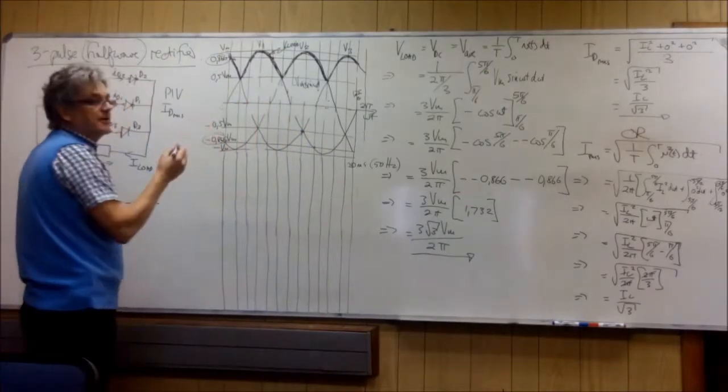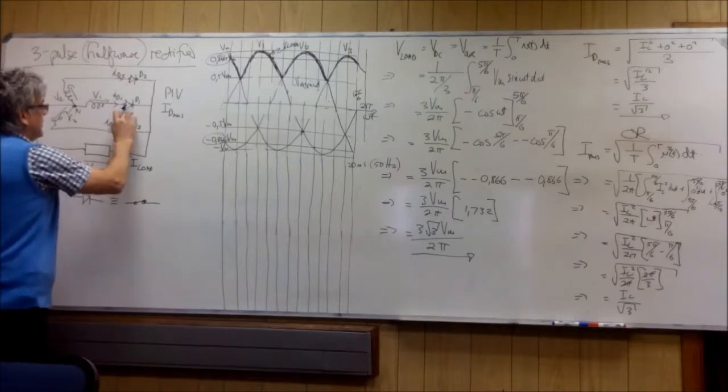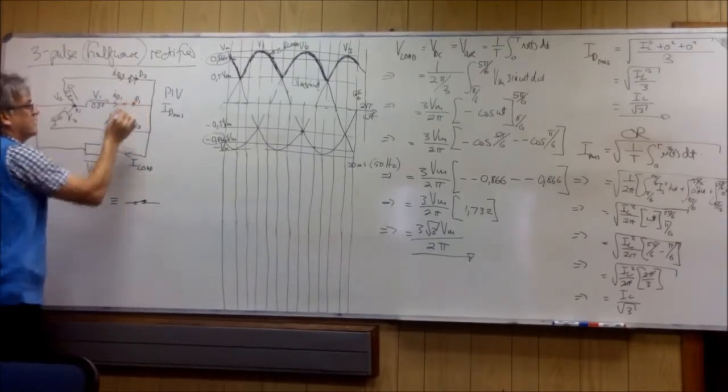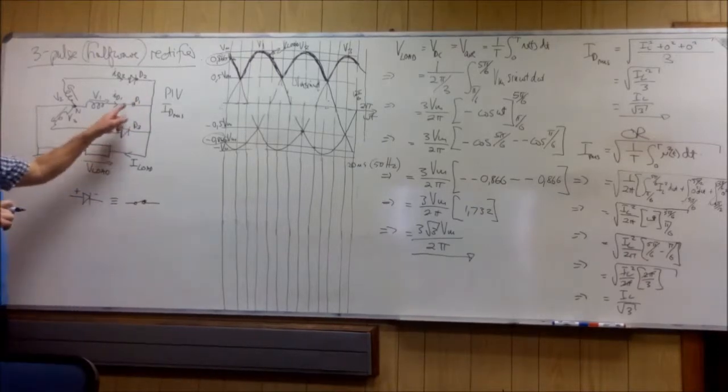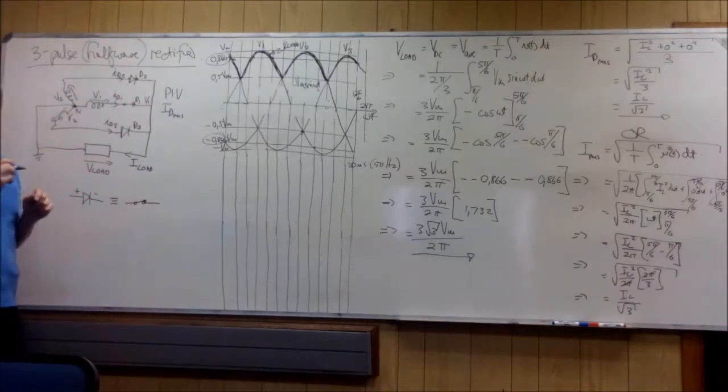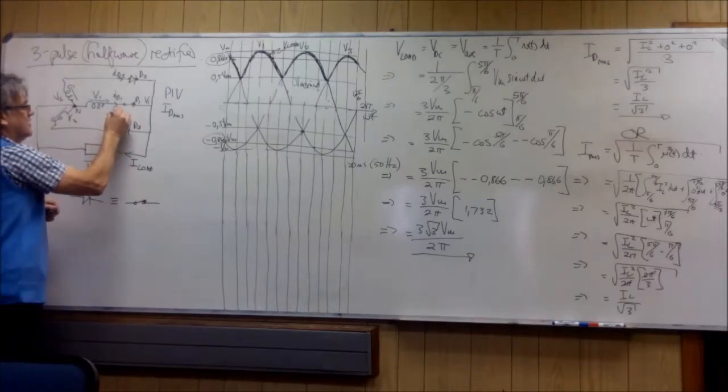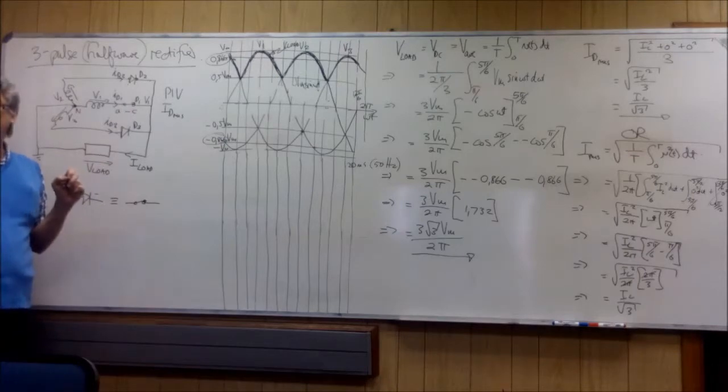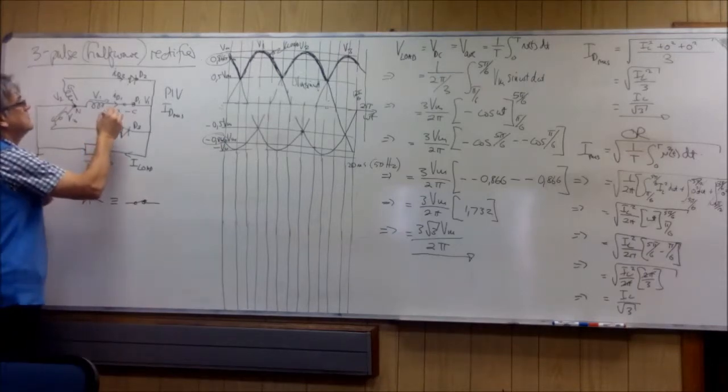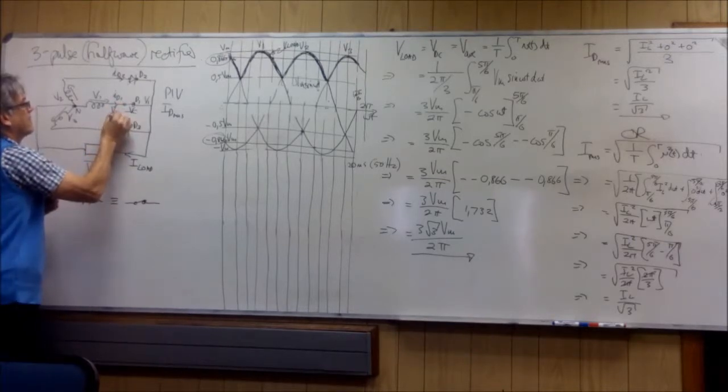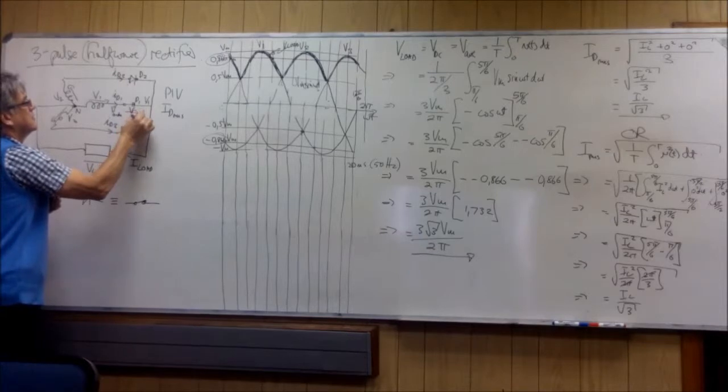So what we know about this diode 1, D1, is that when it switches on, the voltage over it on this side is V1, and the voltage on that side is V1. So it is the anode voltage minus the cathode voltage, so it's V1 minus V1, which will give you V anode minus V cathode.